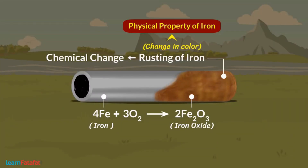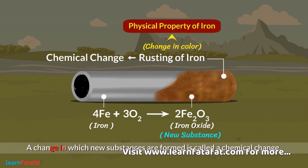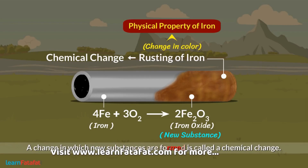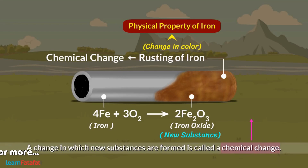Here, iron lost its identity and got a new identity — iron oxide. It is clearly a new substance. A change in which new substances are formed is called a chemical change. A chemical change is also called a chemical reaction.